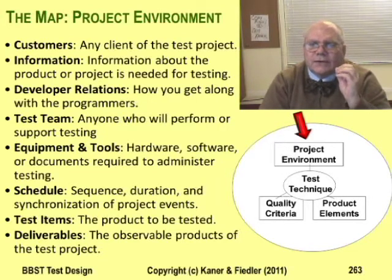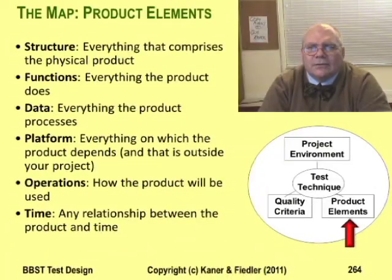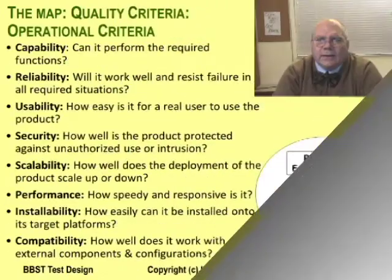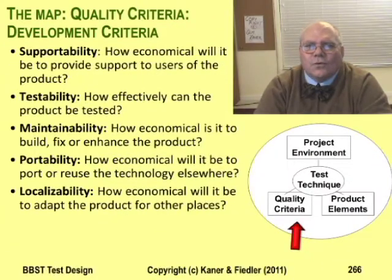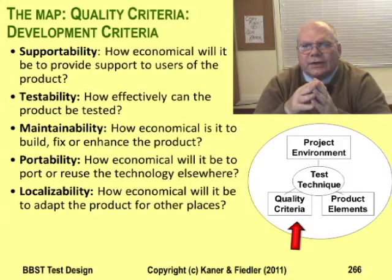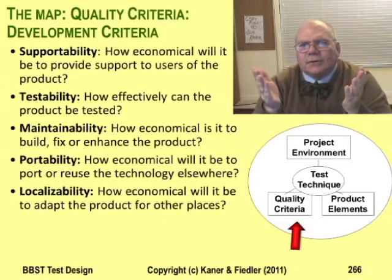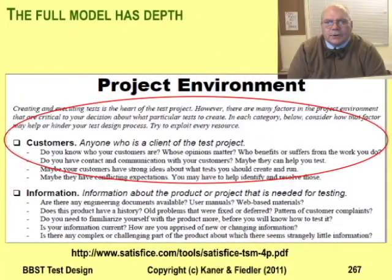You'll need a heuristic test strategy map to do the assignment. This slide lists the product elements like the product structures and functions. Here are the operational quality criteria — these are the qualities that end users notice, like reliability and security. And here are the quality criteria for development. These are things that programmers notice about the internal design and implementation, like maintainability and testability. All of the categories — project environment, product elements, and quality criteria — have subcategories and sub-subcategories.